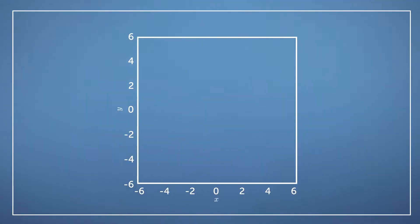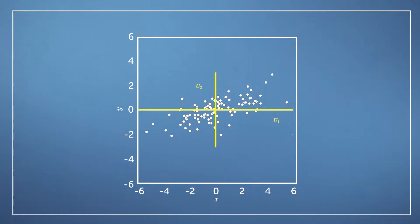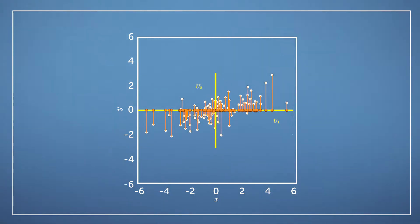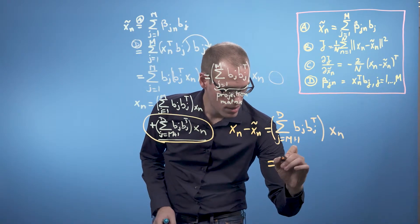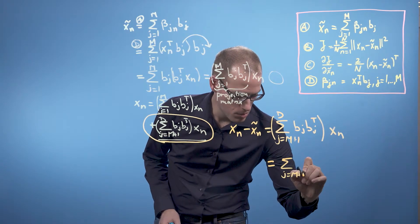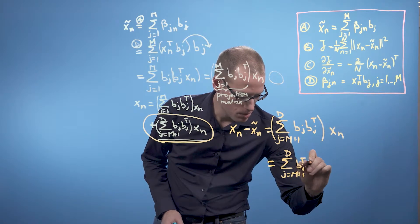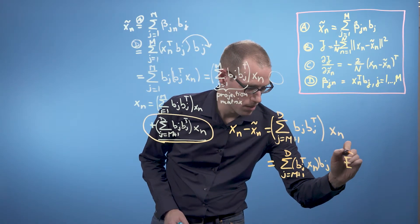So now we can look at this displacement vector — the difference between xn and its projection. We can see that the displacement vector lies exclusively in the subspace that we ignore, that means the orthogonal complement to the principal subspace. Let's look at an example in two dimensions. We have a data set in two dimensions represented by these dots, and we are interested in projecting them onto the u1 subspace. When we do this and look at the difference vector between the original data and the projected data, we get these vertical lines — they have no x component, only a component in u2, the orthogonal complement to u1. So we rewrite this as the sum j equals m plus 1 to d of bj transpose times xn times bj, and we call this equation E.